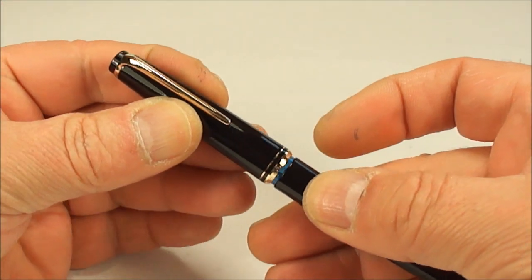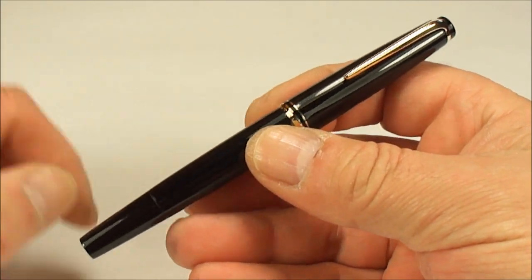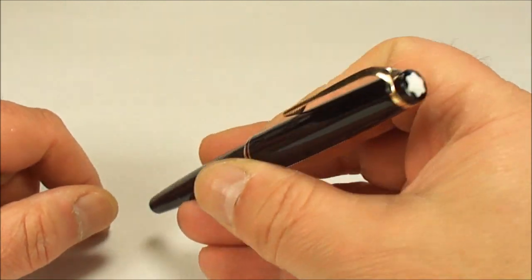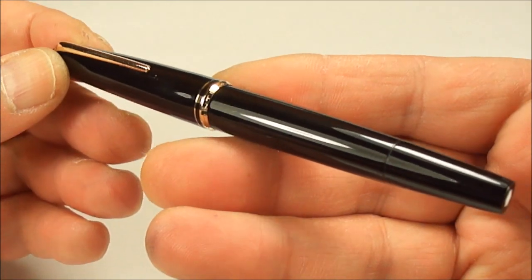So there we have it. Let's pop the cap back on like so. And there we have it, the Montblanc number 22 vintage fountain pen from around about the 1960s, in absolutely gorgeous condition in this black.